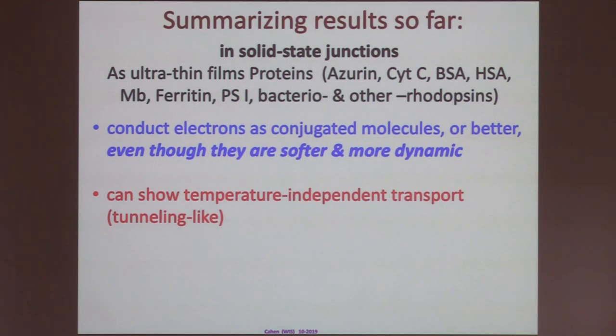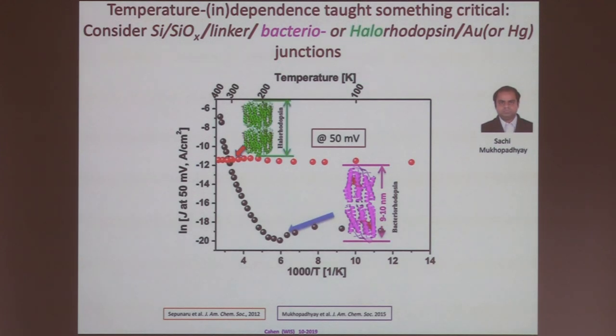So, summarizing the results till now. We have in a number of proteins that electrons can be conducted as in conjugated molecules or better, even though the system that is doing it is soft and dynamic. And I'm not sure that we have given enough attention to it, although, as I'll show you in a minute, David Beratan really took our nose and pushed it into it recently. And it can show temperature-independent transport, which is typical for tunneling. So, that's a question, and I'm not going to be able to answer it, but I will try to formulate it in a sharper way. This temperature-independence, by the way, taught us something very critical.